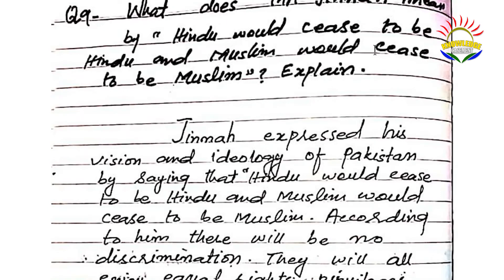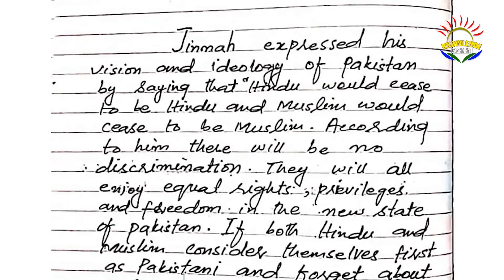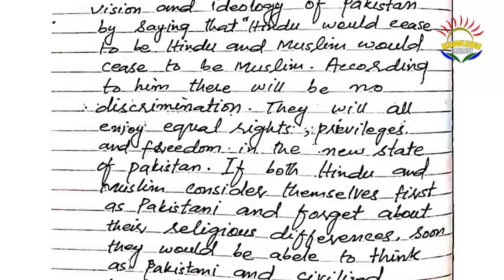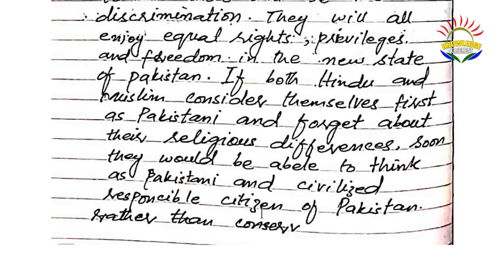Question number nine: what does M.A. Jinnah mean by 'Hindus would cease to be Hindu and Muslims would cease to be Muslim'? Jinnah expressed his vision and ideology of Pakistan by saying that Hindus would cease to be Hindu and Muslims would cease to be Muslim. According to him, there will be no discrimination — they will all enjoy equal rights, privileges, and freedom in the new state of Pakistan. If both Hindus and Muslims consider themselves first as Pakistanis and forget about their religious differences, soon they would be able to think as Pakistani and civilized, responsible citizens of Pakistan.